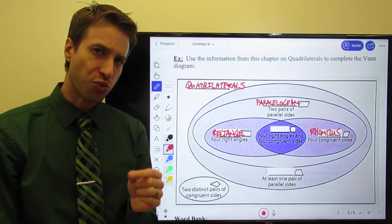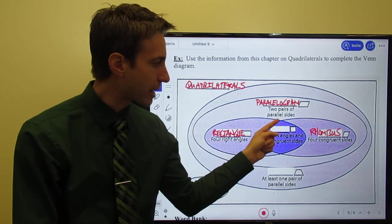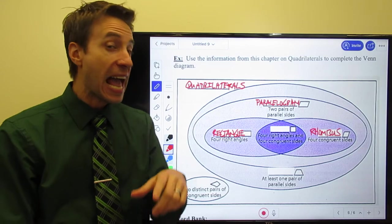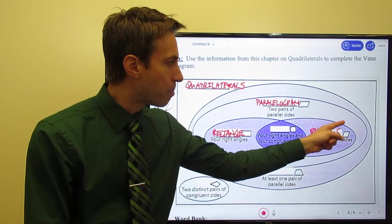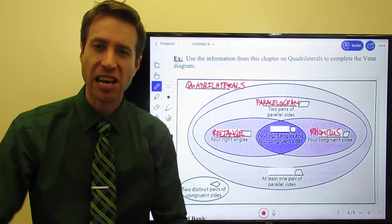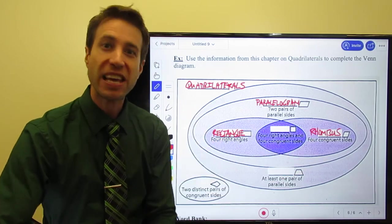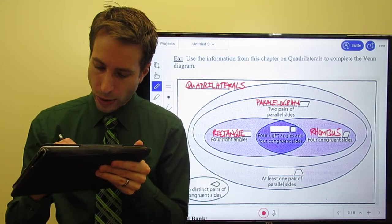Then, we talked about this really interesting figure where we take the properties of rectangles and we combine the properties of rectangles with the properties of rhombuses. And where those properties overlap gives us a really interesting shape that we call a square.